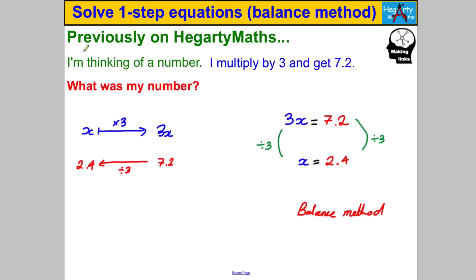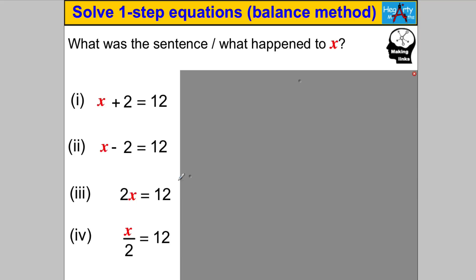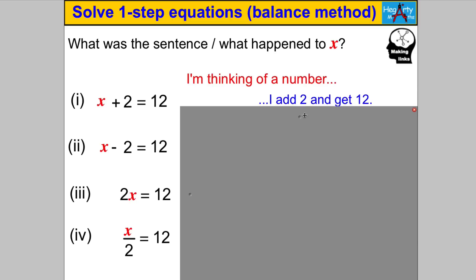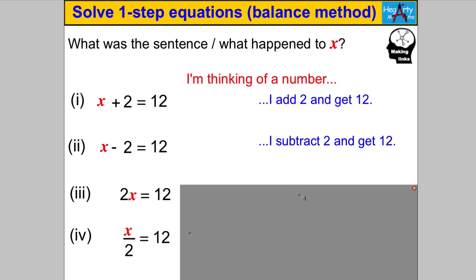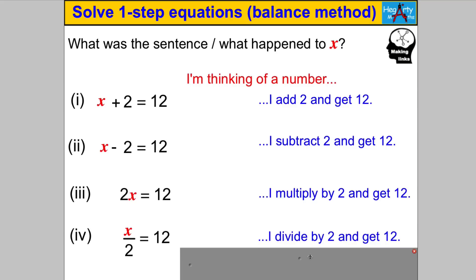In this video you're not going to be given an 'I'm thinking of a number' puzzle — someone's going to give you an equation to solve to find X, and you're going to use the balance method. The key skill you need is to think of the equation as 'what happened to X?' You need to think: I was thinking of a number, I tripled it and got 7.2, so your first step will be to undo tripling by dividing both sides by 3. Pause the video and tell me what happened to X in each of these cases. Hopefully you got: I add 2 and get 12; I subtract 2 and get 12; I multiply by 2 and get 12; I divide by 2 and get 12.